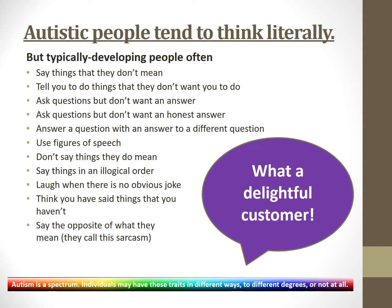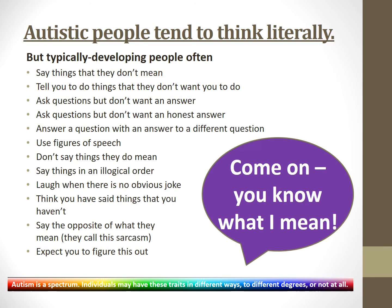They say the opposite of what they mean — they call this sarcasm. So you're working in a shop, a particularly obnoxious person is very rude to your colleague and leaves, and your colleague says 'what a delightful customer' — and you think, no, completely the opposite, surely. And on top of all that, they expect you to figure out that that's what they're doing — to know they're being sarcastic or using figures of speech. I hope no one who's neurotypical is offended; it's just meant to show things from an autistic point of view.